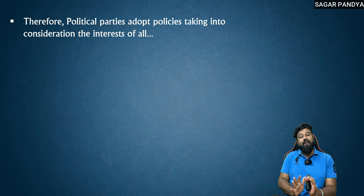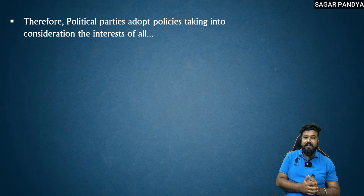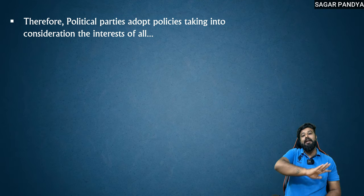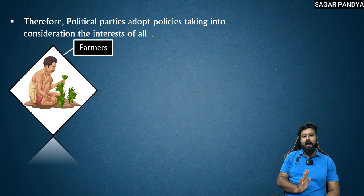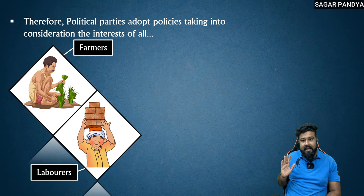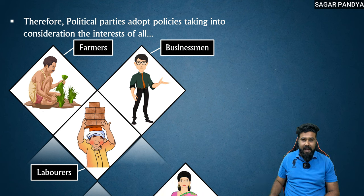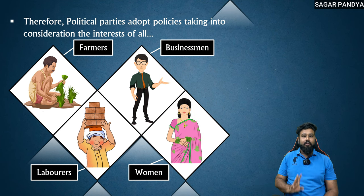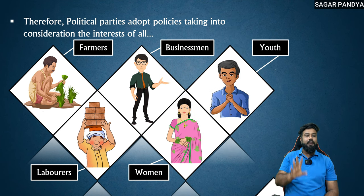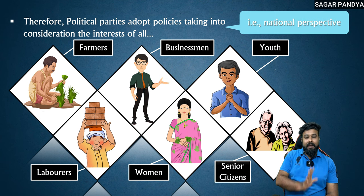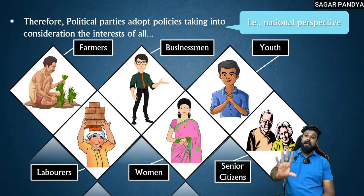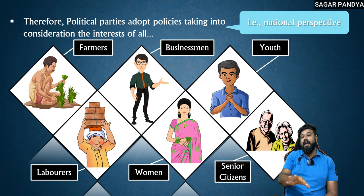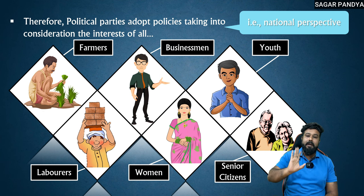That is one such reason why political parties adopt the policy taking into consideration the interest of everybody — whether it be farmers, laborers, businessmen, women, youth, or senior citizens. From a national perspective, the importance of everyone is shown, and it is the responsibility of political parties to solve everyone's problems.